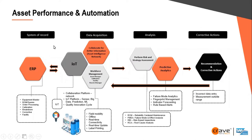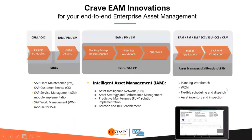There is no system intelligence available at most organizations, and we are taking risks when all our production facilities are completely dependent on maintenance activity. When we talk about asset performance, there are four components: system of record, data acquisition, analysis, and corrective action. In the system of records, we have SAP ERP where equipment master, BOM, order processing, and calibration are already available. We use workforce management, collaborative platform, and IoT for acquiring data. We perform risk and strategy assessment using tools like RCM, reliability content management, FMEA — failure mode and effect analysis — and then take corrective action by recommendation.